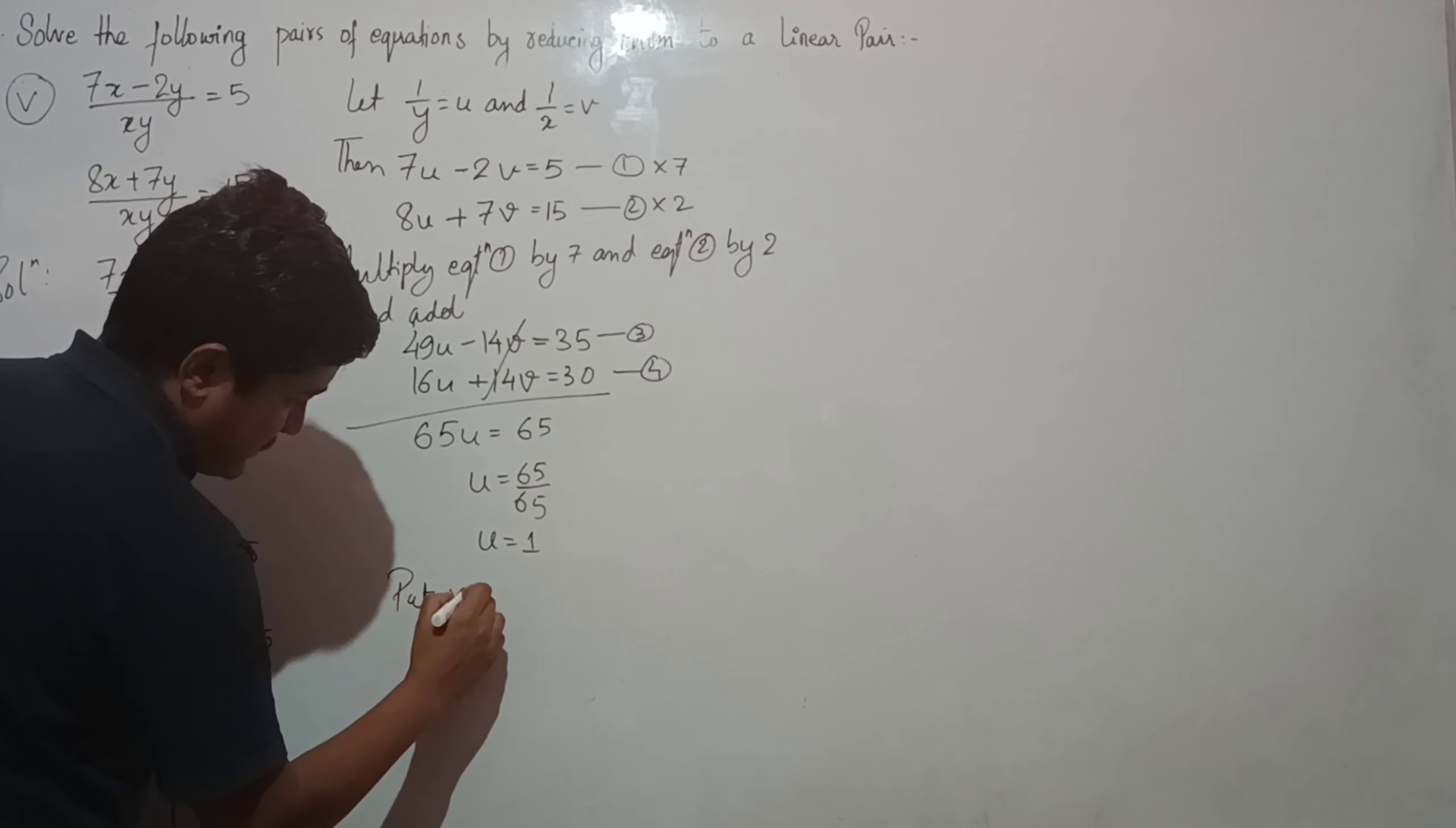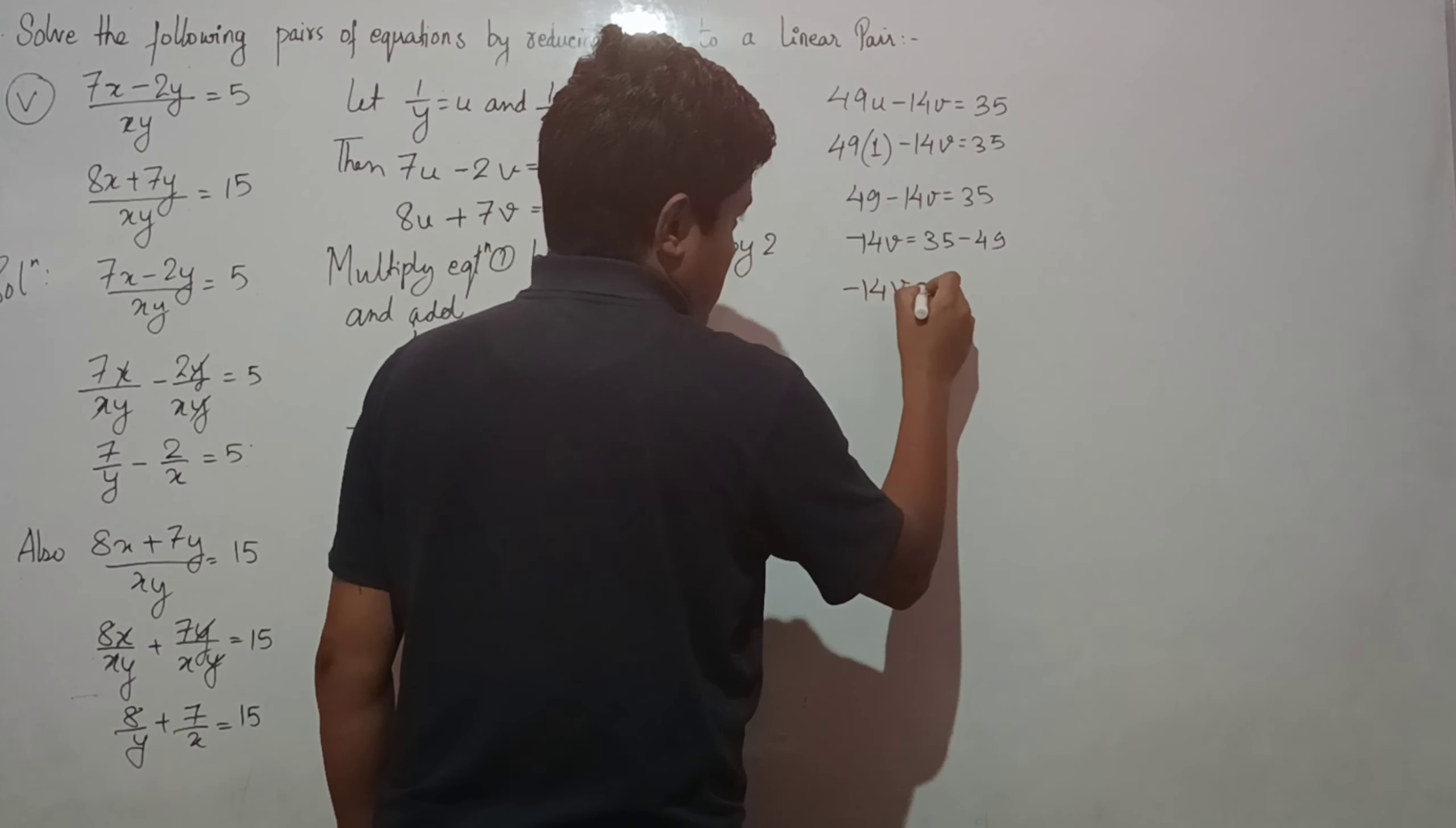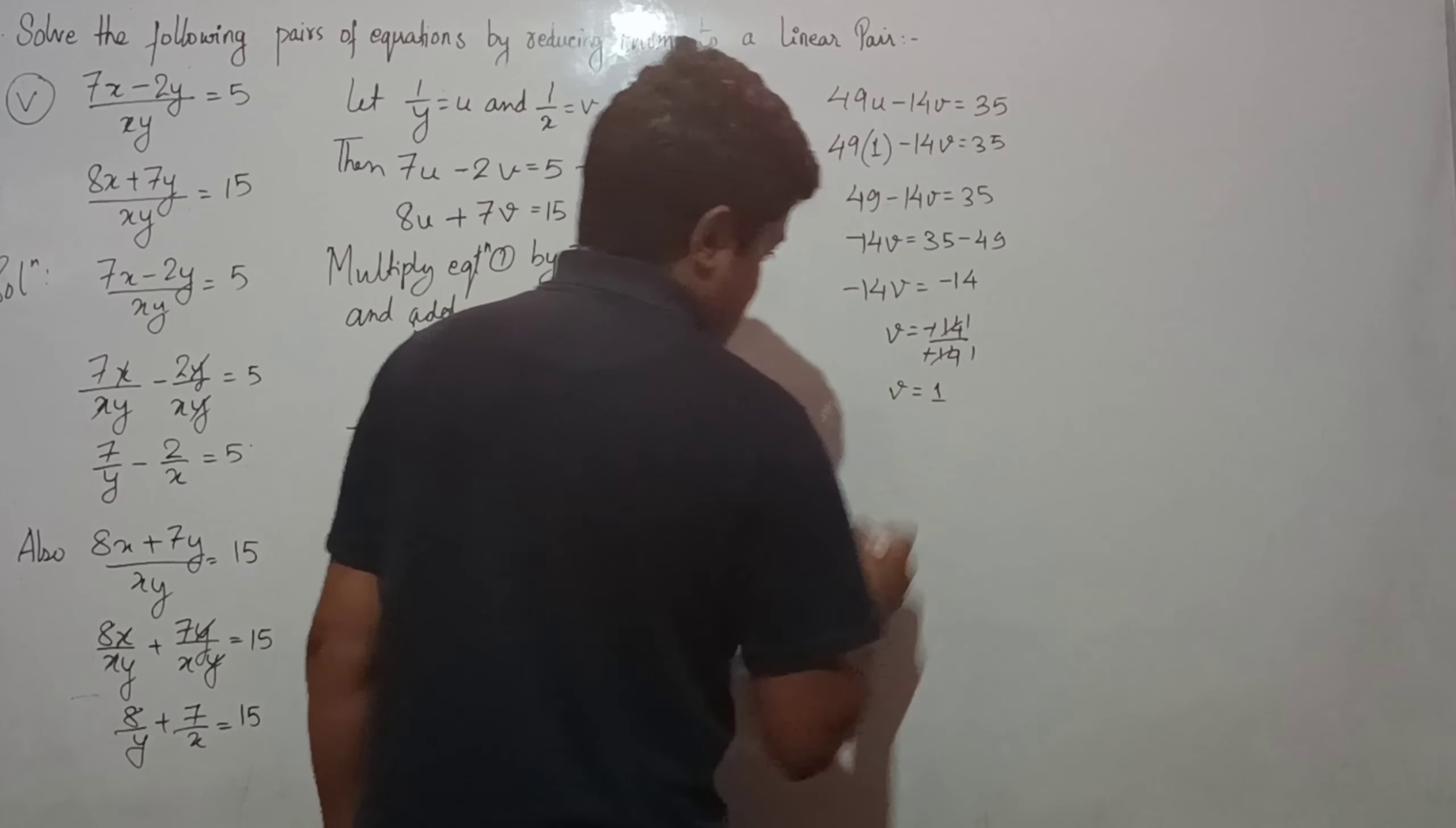Put the value of u equals 1 in equation 3 (the modified equation 1). 49u minus 14v equals 35. Substituting u equals 1: 49 times 1 minus 14v equals 35, so 49 minus 14v equals 35. Therefore minus 14v equals 35 minus 49, which is minus 14. Dividing both sides by minus 14, we get v equals 1.